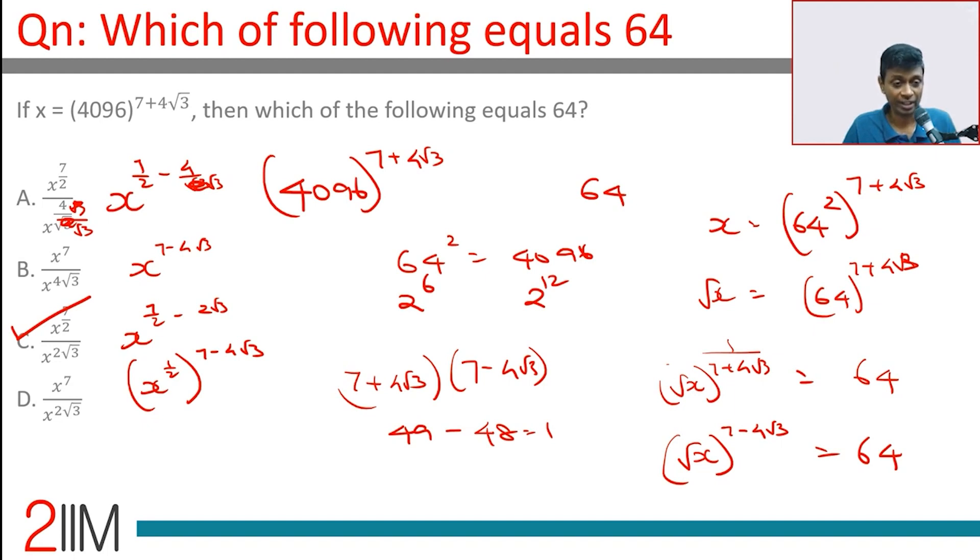Numerical friendliness, by being friendly with picking that 7 plus 4 root 3 and 7 minus 4 root 3 are reciprocals, 4096 is 64 squared, that really pays off. So it's a cruel question if you can't pick that up.